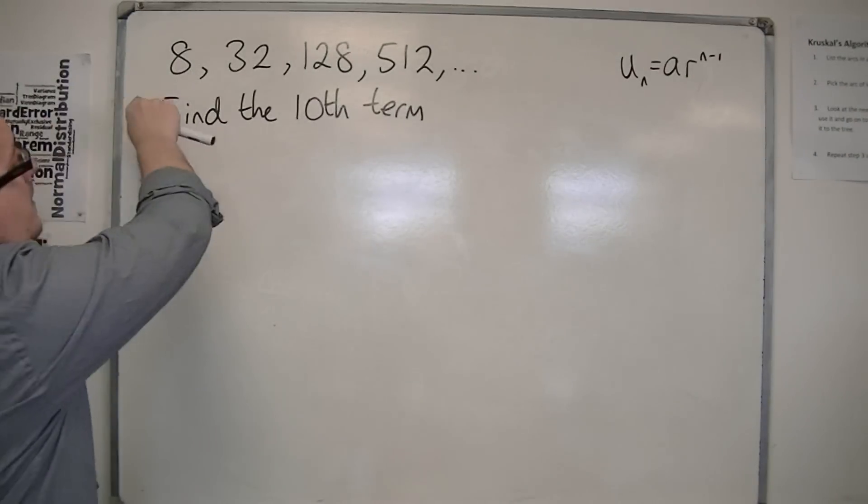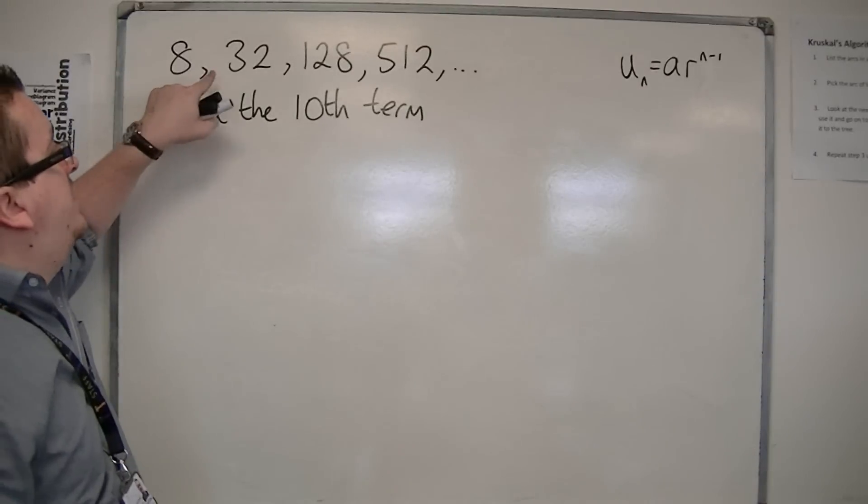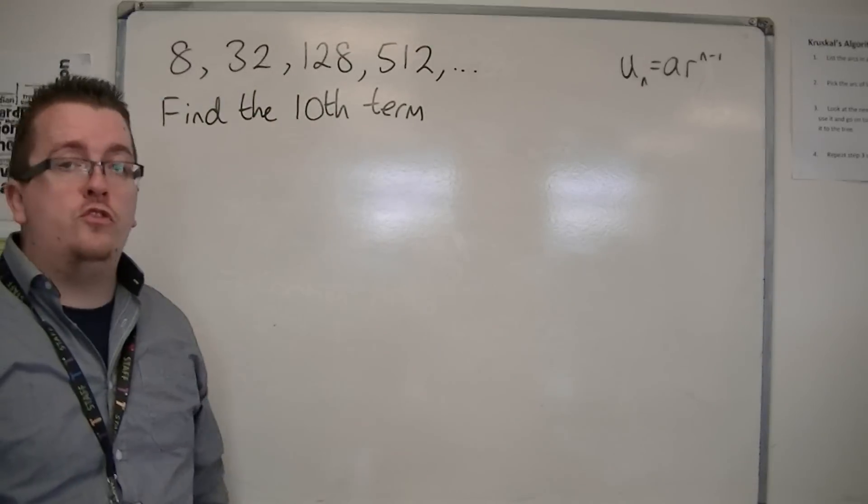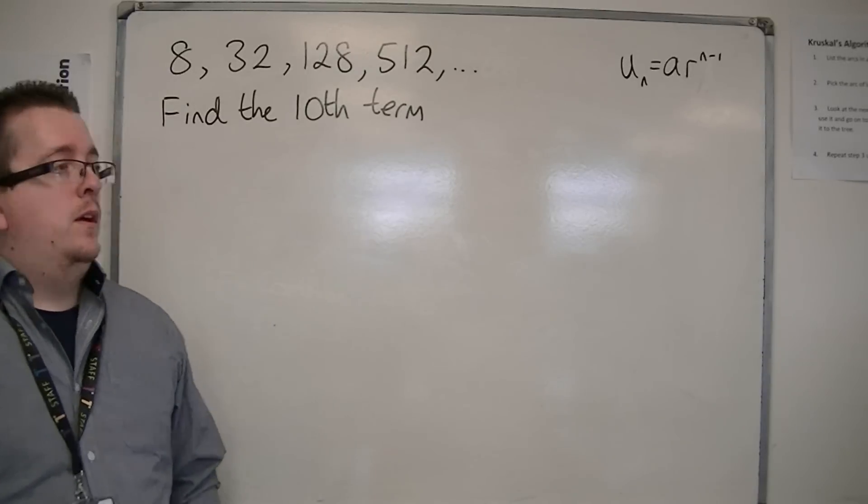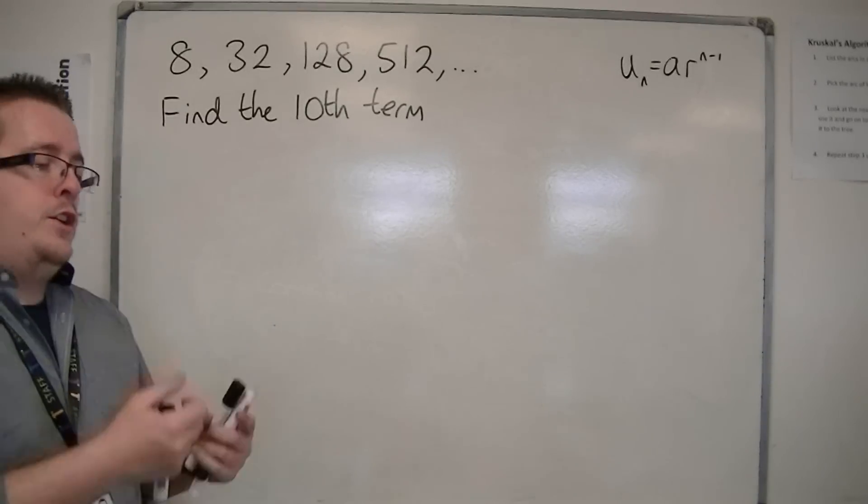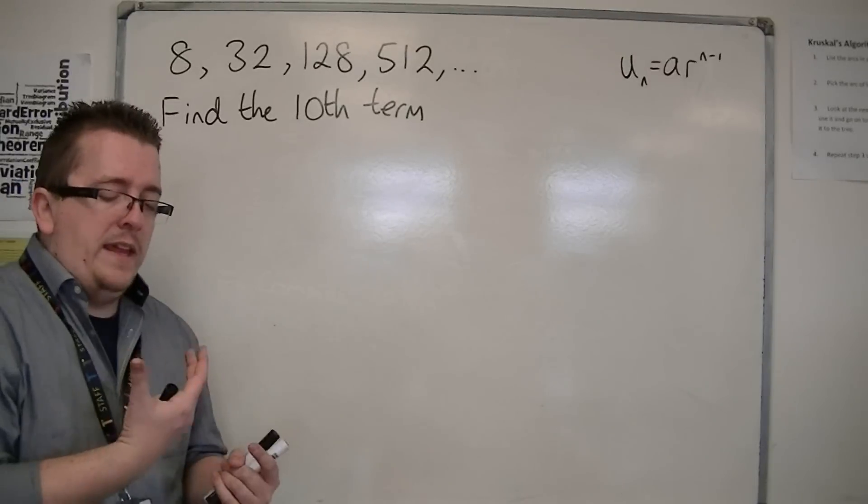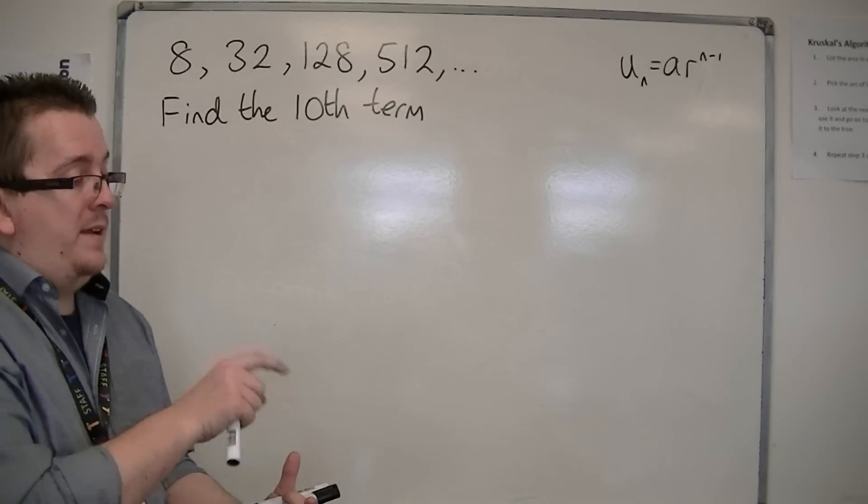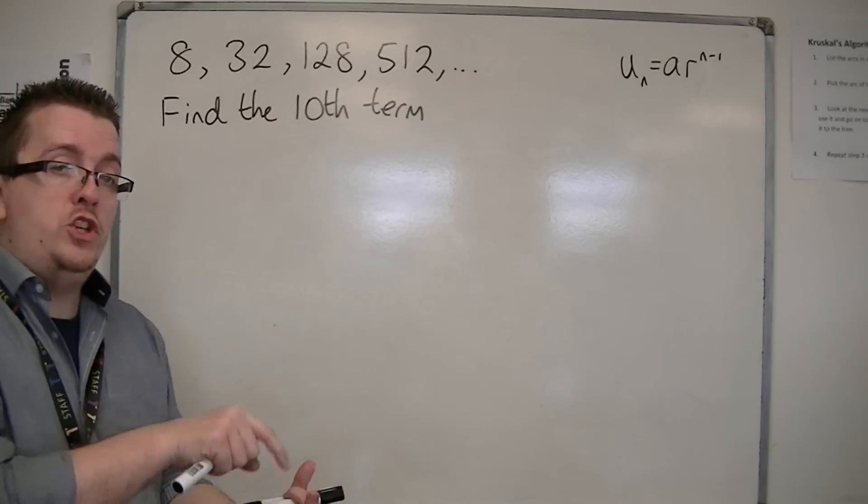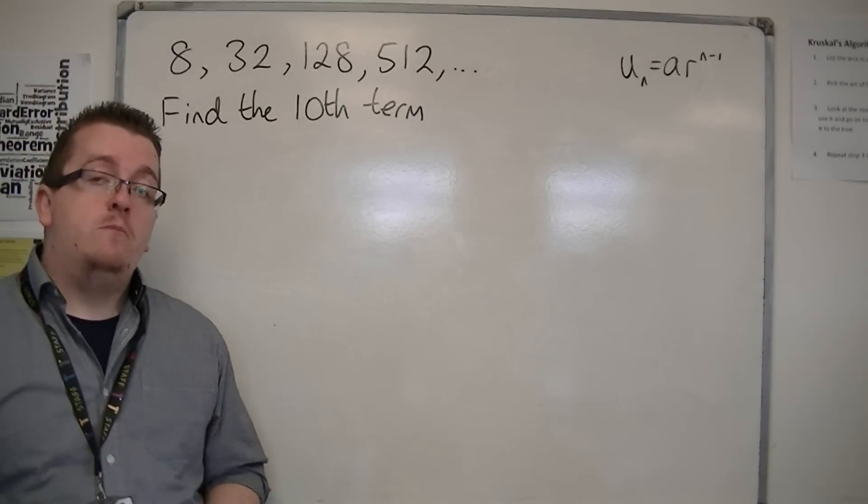Now, if we were given a geometric sequence like this: 8, 32, 128, 512, etc., and we're asked to find the 10th term, I could just find out what the common ratio is and then put in my calculator multiplied by a certain number each time until I've reached the 10th number in the list.